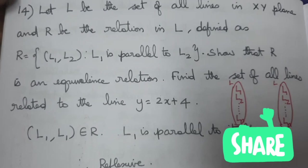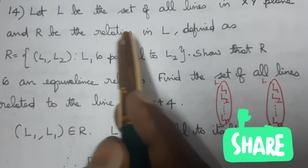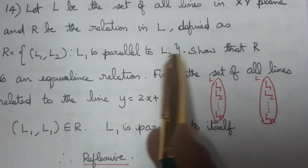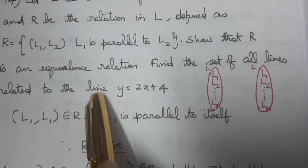Exercise 1.4. Let L be the set of all lines in the XY plane and R be the relation in L defined as R equal to {(L1, L2) such that L1 is parallel to L2}. Show that R is an equivalence relation. Find the set of all lines related to the line Y equal to 2X plus 4.